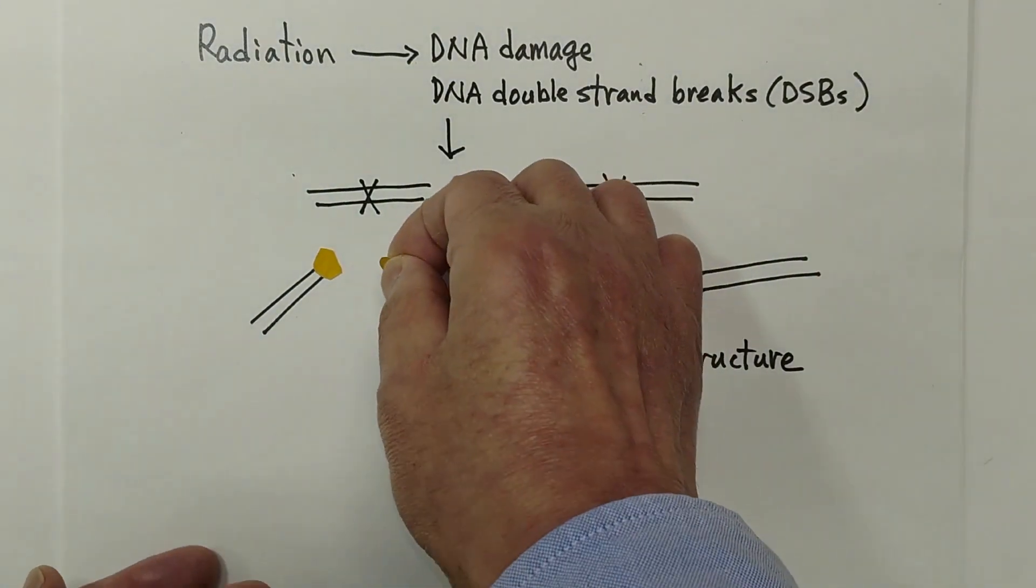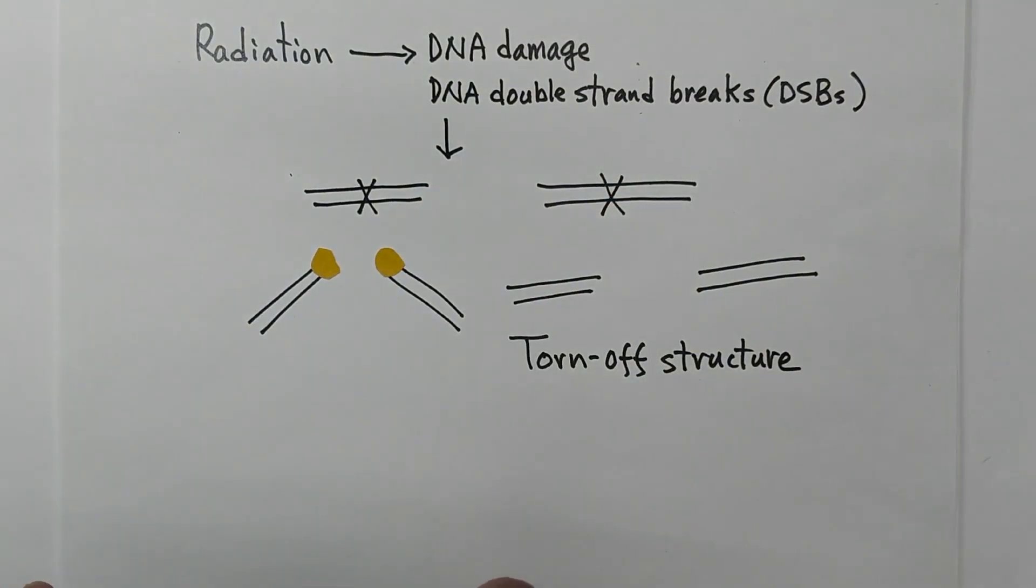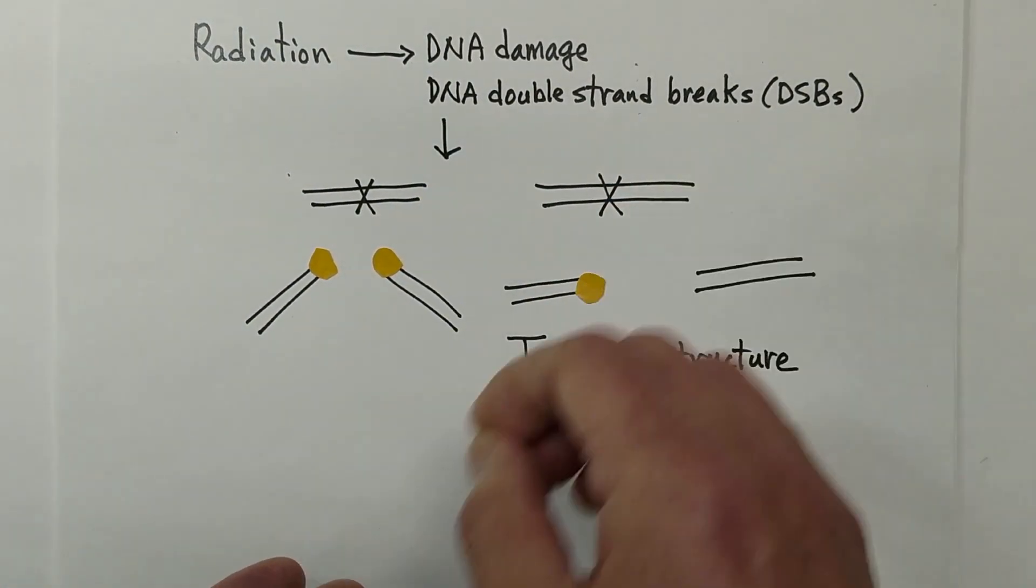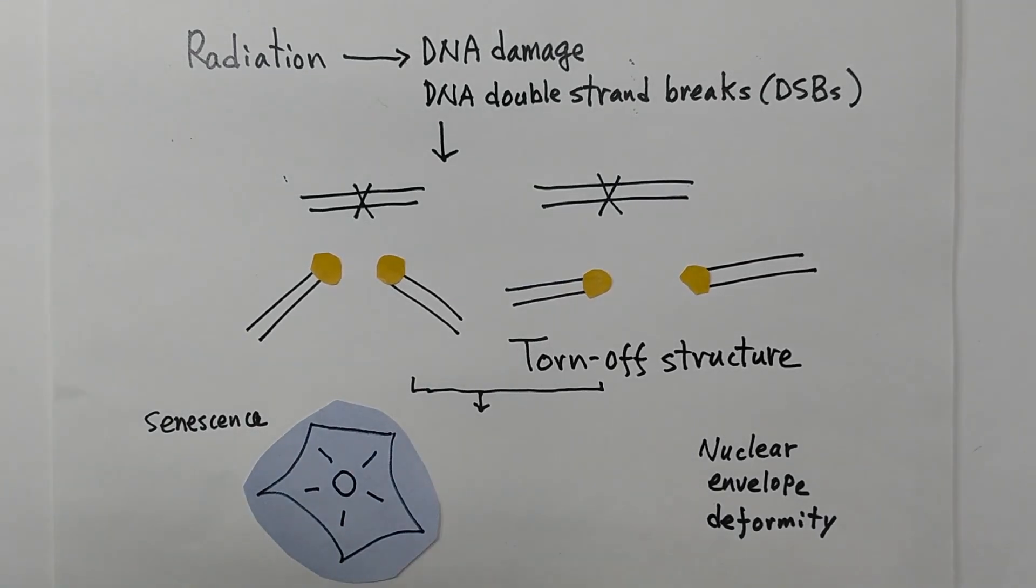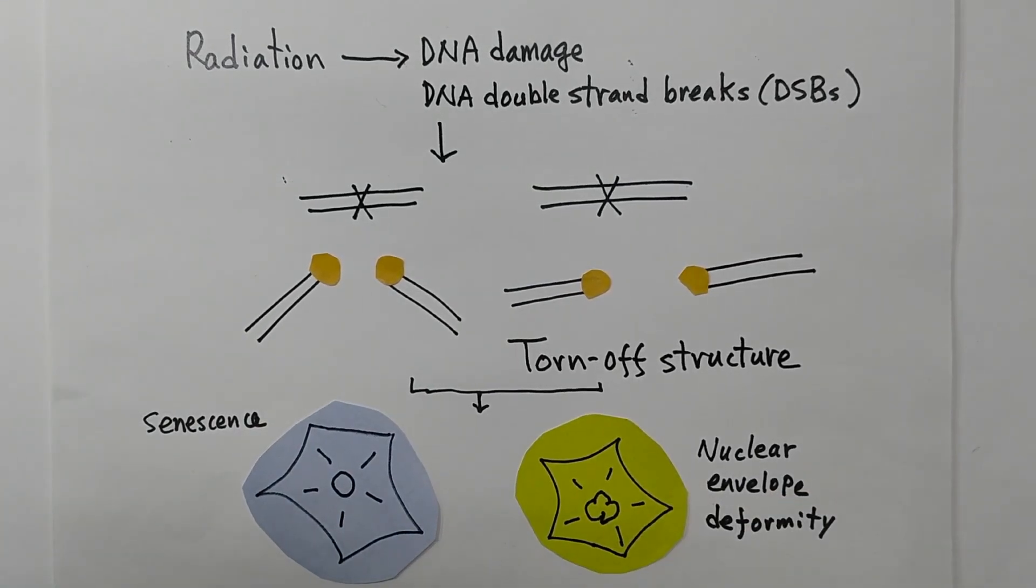We have found that they have a paired structure as the telomere chromosome ends, which eventually cause cellular senescence and abnormalities in nuclear envelope structure.